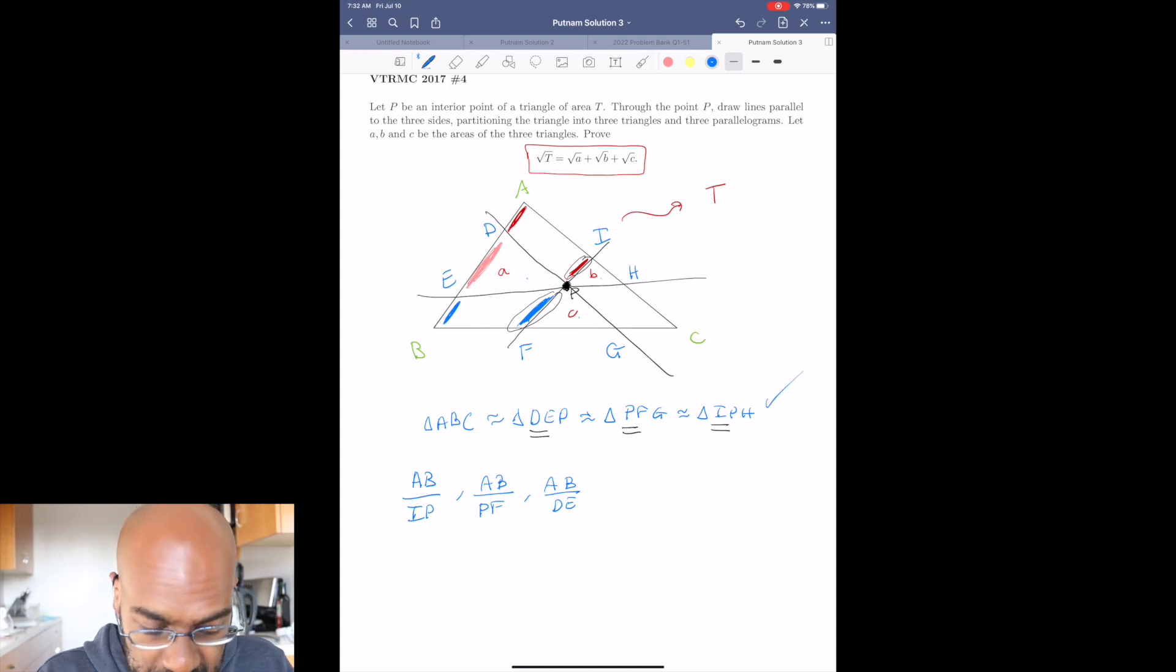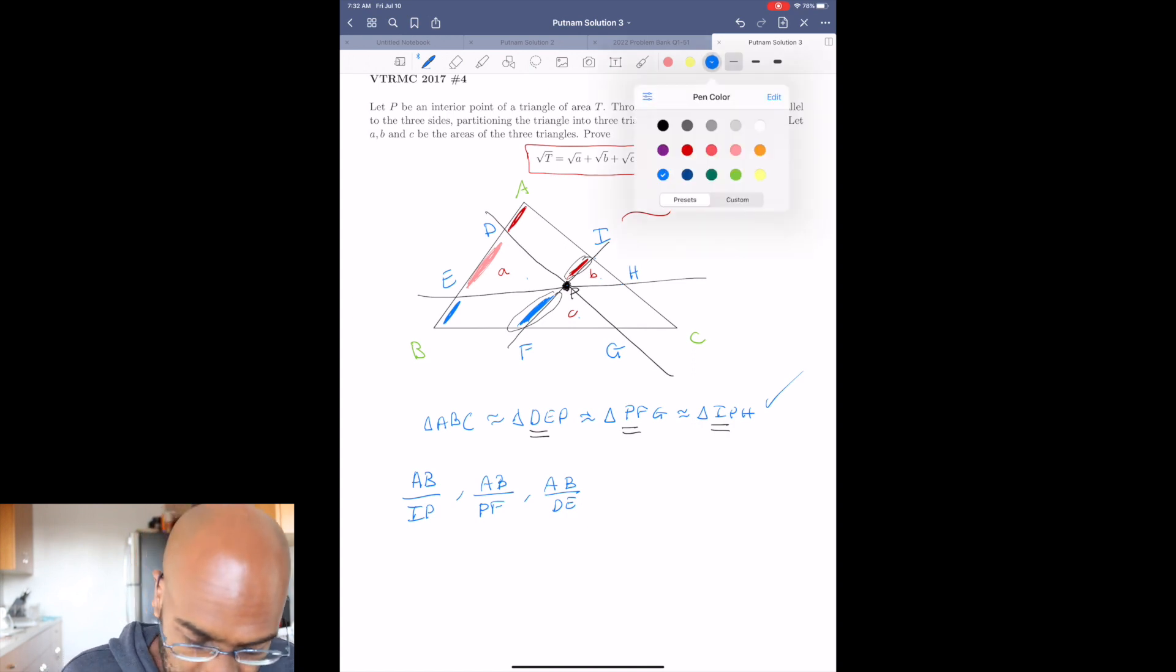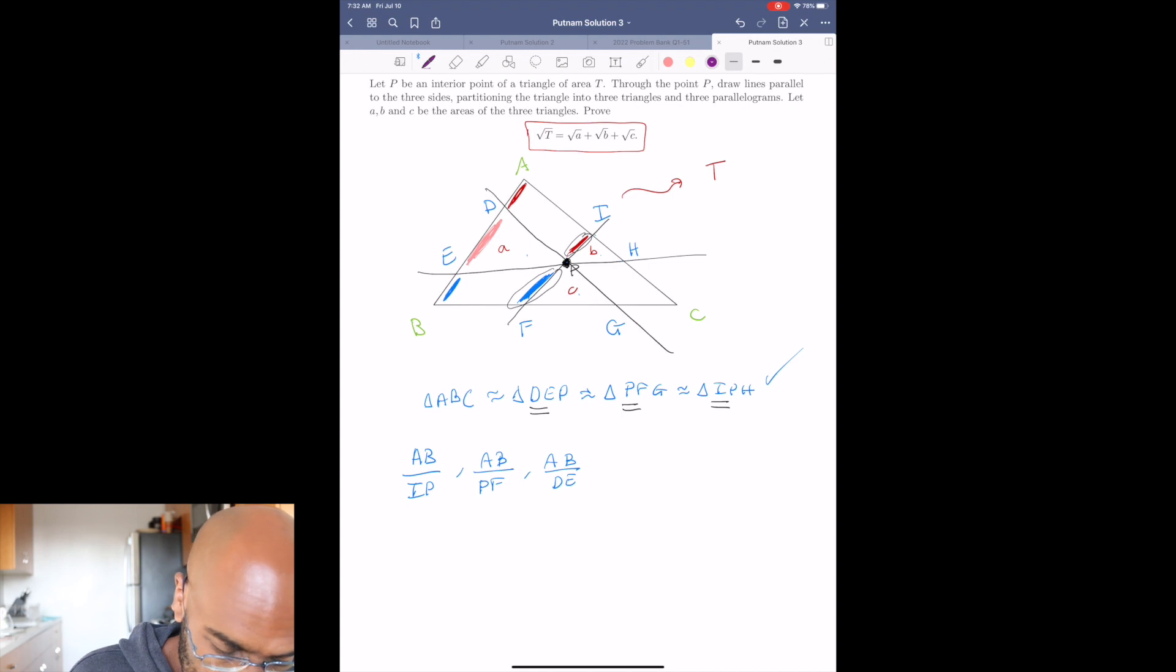So for example, since the area of the big triangle is T, and the area of triangle IPH is B, the side lengths will have ratios that are the square roots of each of these things divided by each other. So for example, here, the ratio will be the square root of T over the square root of B. Again, because the area of the involved triangles have a ratio of T to B, and area is quadratic in side length. So similarly here, we'll have square root T over square root C, and here we have square root T over square root A.